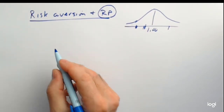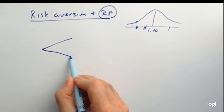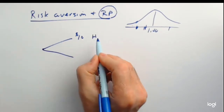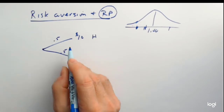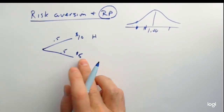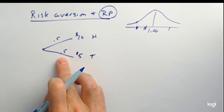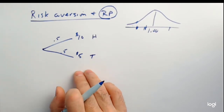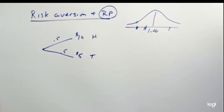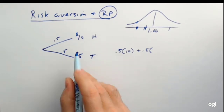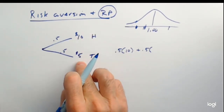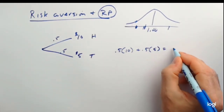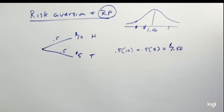Let's say you can enter a bet where you get $10 if a coin comes up heads — there's a 50% chance — and $5 if it comes up tails — another 50% chance. The weights add up to 100%. How much would you pay for this bet? Some people would say it's simply a weighted average of the two payoffs: 0.5 × $10 + 0.5 × $5 = $7.50. If you'd pay $7.50, that means you're risk-neutral, because you're literally paying the expected value.